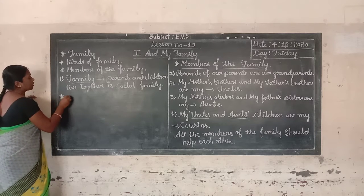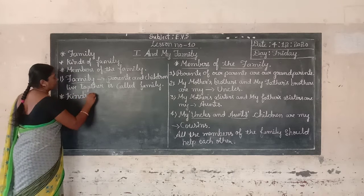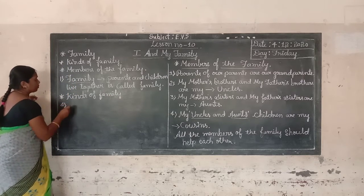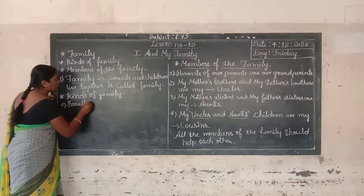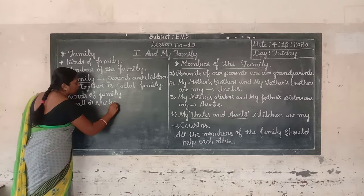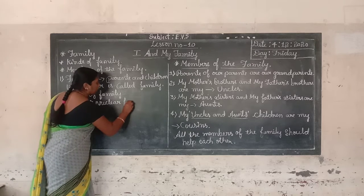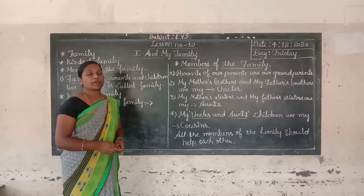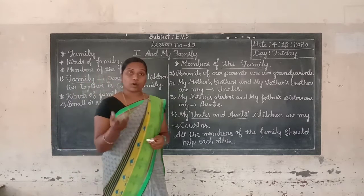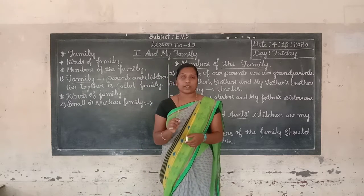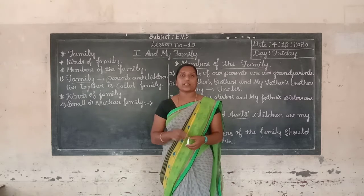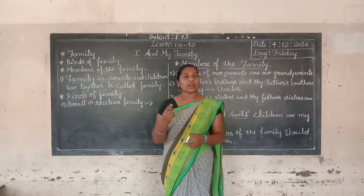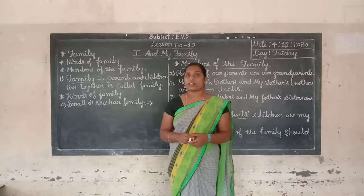There are two kinds of family: small family, that is nuclear family, and large family, also called joint family. So what is a nuclear family? In a small family, parents and one or two children live together. It is called a nuclear family.